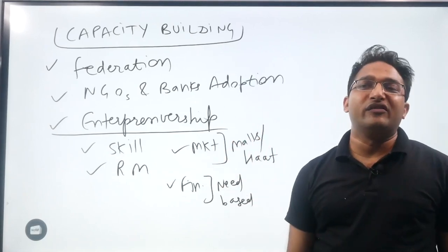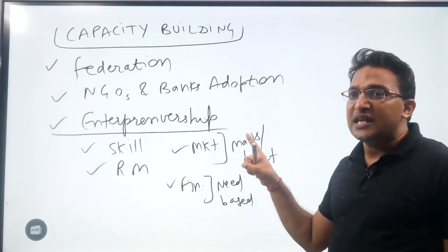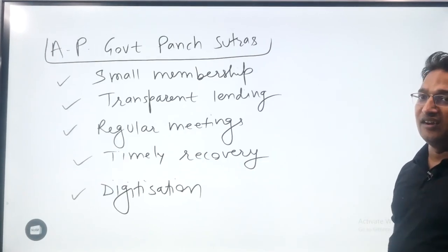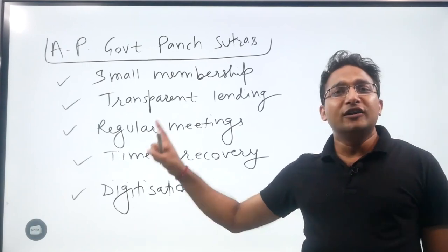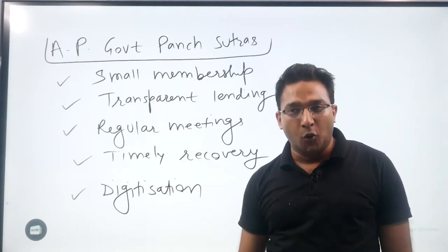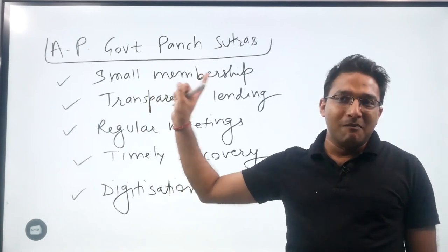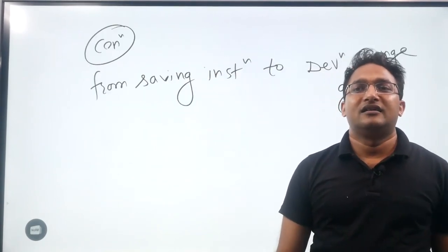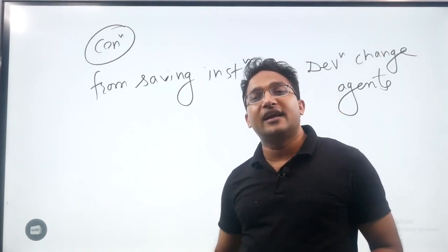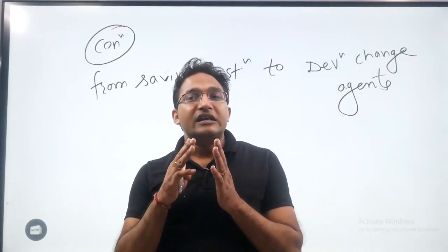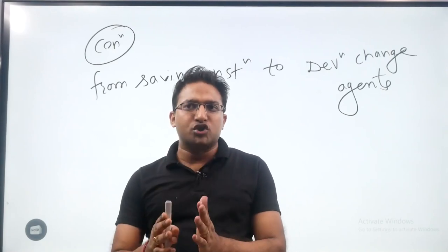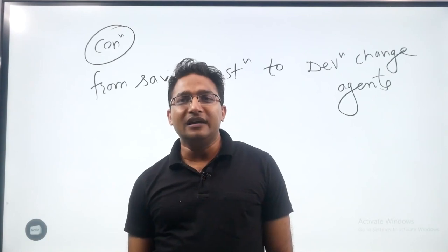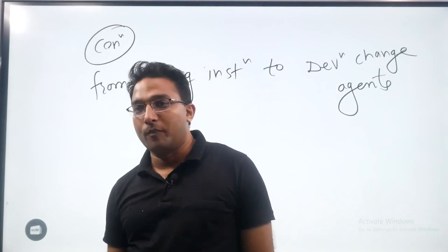Entrepreneurship culture can be promoted by providing the concept of SHG nodes, SHG hubs, and need-based funding, skill development, and raw materials. Best practices that focus on small membership, transparent lending, regular meetings, timely recovery, and digitalization should be adopted. Ultimately, we should try to convert self-help groups from simply saving institutions to developmental change agents. This completes the full revision of the topic.